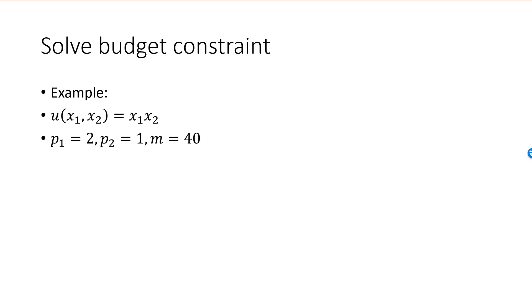Here is the second method. We use the same example. Start from the budget constraint, 2x1 plus x2 is equal to 40, and solve it for either variable. Here it's simpler to solve it for x2. We have x2 equal to 40 minus 2x1.